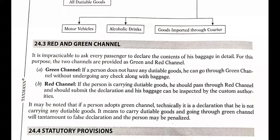If the person is carrying dutiable goods — meaning he has to pay custom duty on them — he should pass through the red channel and submit the declaration. His baggage can then be inspected by the custom authorities. For example, if he is bringing gold, mobile phones, or other such items, these come under dutiable goods and must be declared in the red channel.